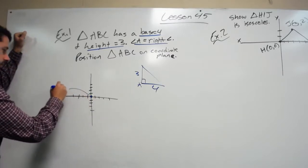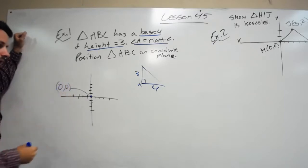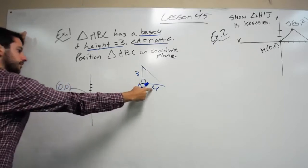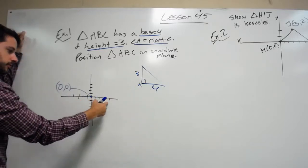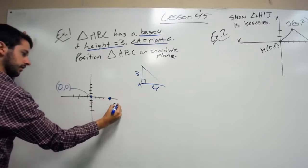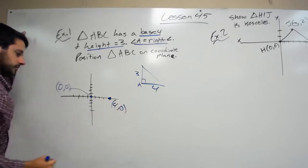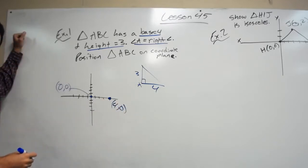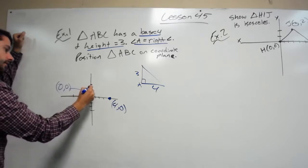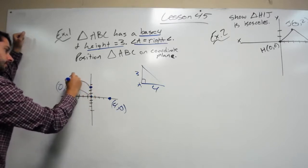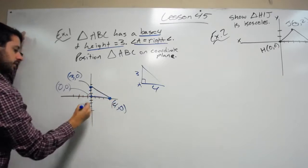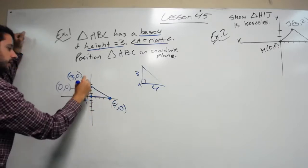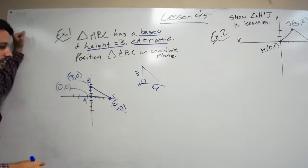So we're going to call this (0,0), alright? It's like a little owl, (0,0). And if we know it has a base of 4, well I'm going to count 4 to the right: 1, 2, 3, 4. And this coordinate will be at (4,0). The last thing we know is that it has a height of 3. Now if we connect it, we can see that we have placed a triangle A, B, C on the coordinate grid.